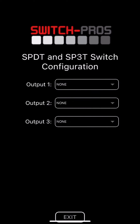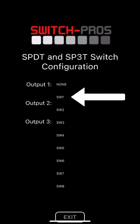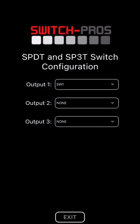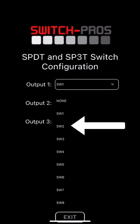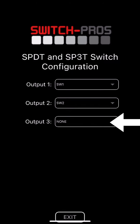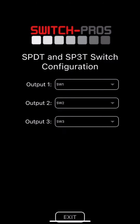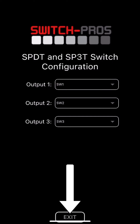You'll then select your first output from the drop-down, then your second output from the drop-down, and if desired, select a third output from the drop-down. You'll then exit back out to the home screen.